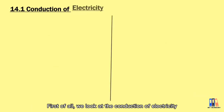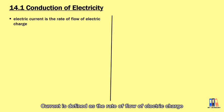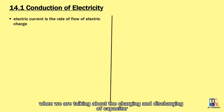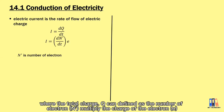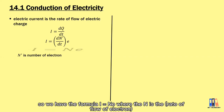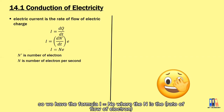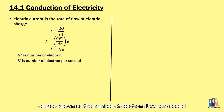First, we look at the conduction of electricity. Current is defined as the rate of flow of electric charge, which was mentioned in the previous chapter when we talked about the charging and discharging of a capacitor. Current is given by the formula dq/dt, where the total charge q is defined as the number of electrons multiplied by the charge of the electron e, giving I equal to Ne.